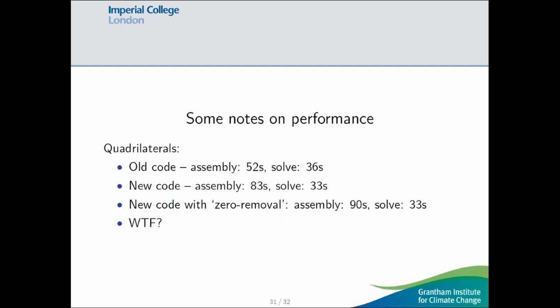So, on quadrilaterals, the old code, where we were making this affine approximation, about 52 seconds. With the new code, where we're doing things properly, this goes up by about 60% to 83 seconds. Although, for some reason, the solve gets slightly faster. And, with this zero removal optimization, the assembly somehow goes up by a few seconds. I have no idea why. This talk is being recorded, so I won't say that out loud.